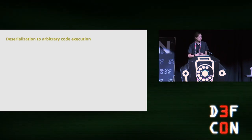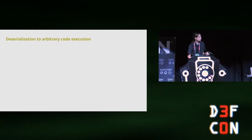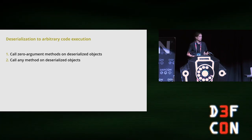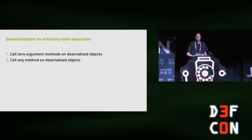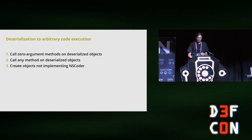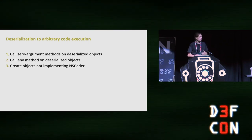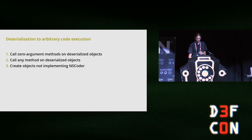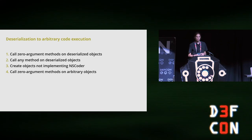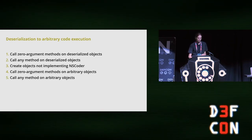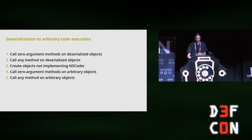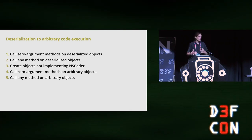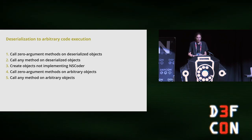For the sake of time and disclosure reasons, I have to skip a couple of steps here. But from calling zero-argument methods, I extended it to call arbitrary methods — still only on deserializable objects. Then I used a trick to also create objects that are not deserializable, that do not implement that protocol, and used a similar binding trick to call zero-argument methods on those, then another trick to call arbitrary methods with controlled arguments. At this point, I can basically call any Objective-C method I want with arguments that I specify.